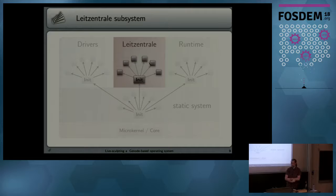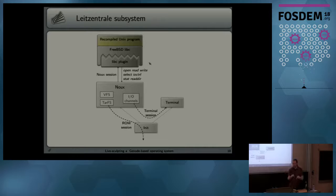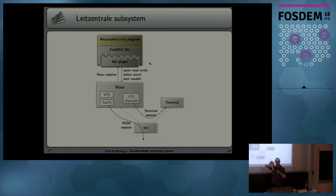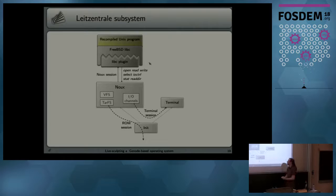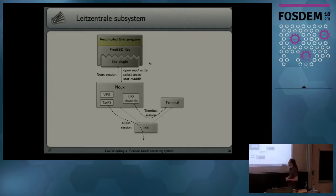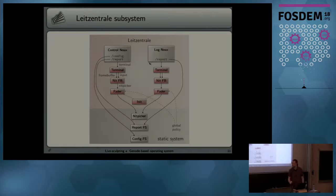Next is the Leitzentrale. We need a way to interact with the computer. We could invent a new shell, but over the last 20 years we've had fond thoughts about Unix and Unix shells. So the idea was to use a user-level Unix implementation as a tool - a nice frontend to interact with file systems. We have a terminal, we feel at home there. The programs we run are just recompiled binaries, like recompiled bash and coreutils, running on top of this kind of Unix kernel. For the Leitzentrale, we use this building block in two instances.